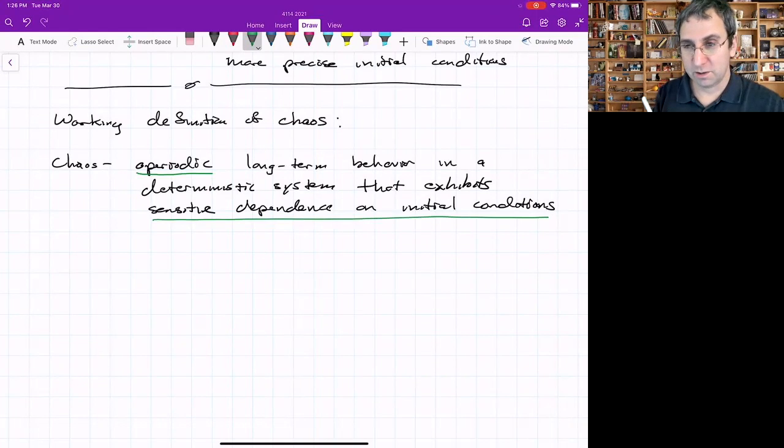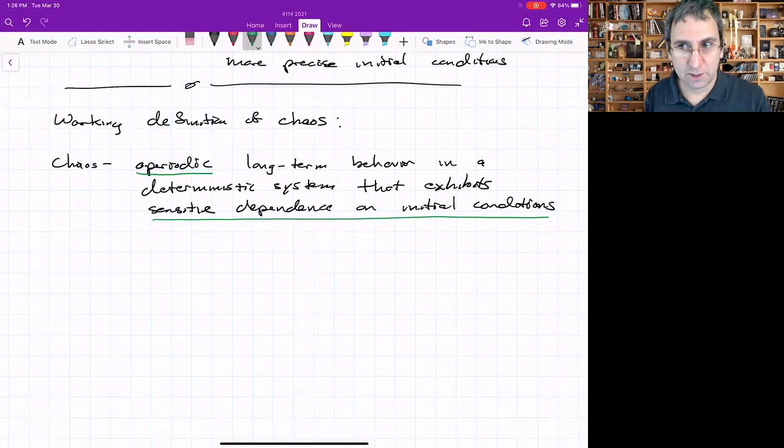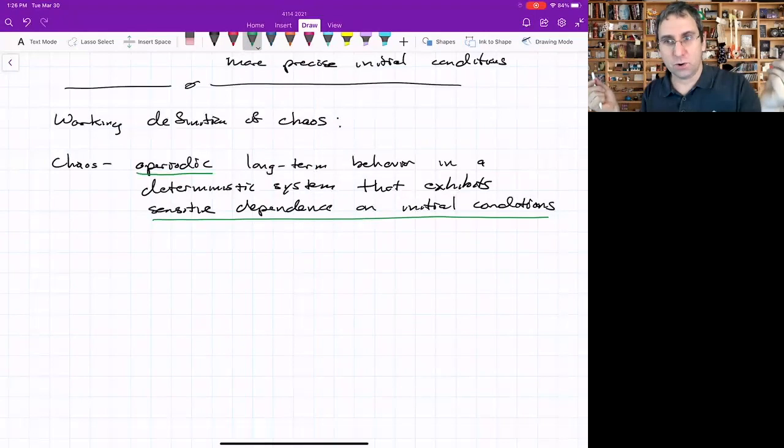But quasi-periodic would not exhibit sensitive dependence on initial conditions. If you have motion on a torus, two initial conditions will track each other and just lag somewhat. There won't be this exponential growth away from each other.